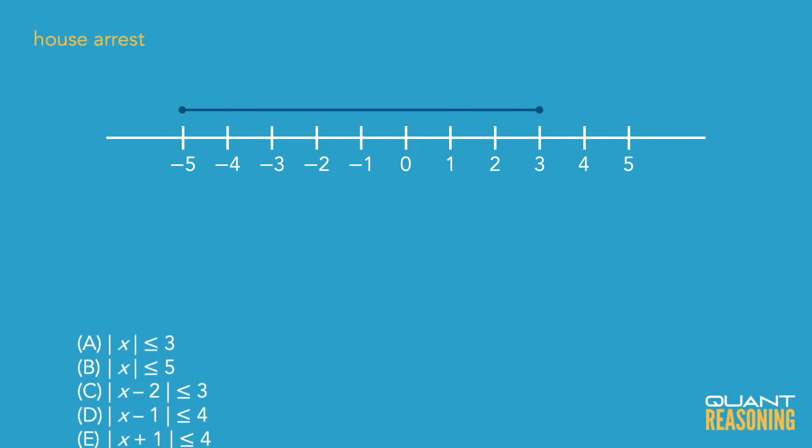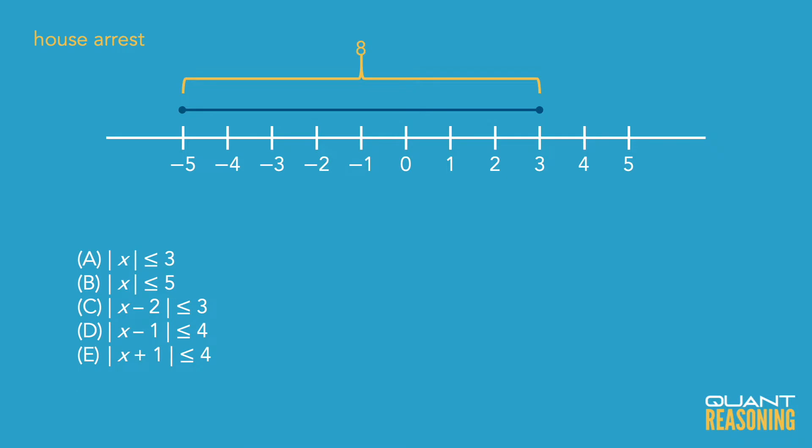Looking at the shaded region here, it should be a house arrest, so we should have an absolute value that's less than something. But all five answer choices have an absolute value that's less than something, so that's not really helpful. What is helpful is noticing that the total range is eight units going from negative five to positive three, and that means the constant in the correct answer should be half of that: four.